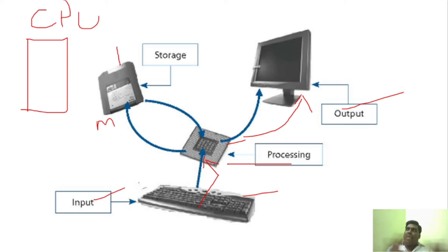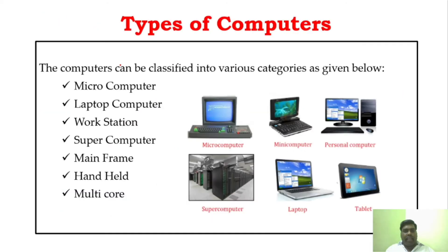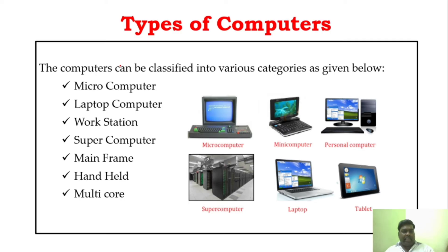So this is the very basic operation of the computer. Now we will see the different types of computer. Computer is classified based upon size and performance. We are almost in the sixth generation of computers. Initially, computer evolution started with variation in sizes.